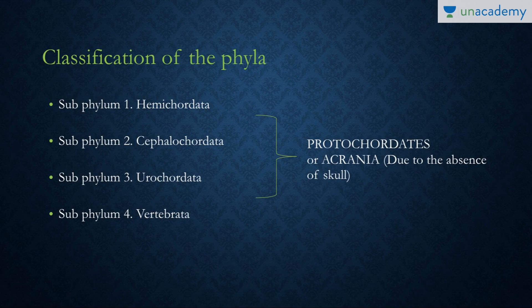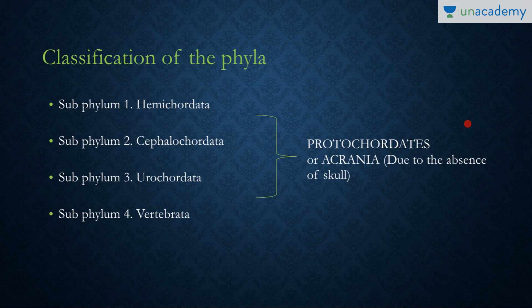In this lesson on Protochordates, I will first divide phylum Chordata into its four subphyla. Subphylum 1, Hemichordata, used to be considered a subphylum under Chordata, but presently it is a separate phylum, as it does not have any notochord. Then we have Subphylum 2: Cephalochordata, Subphylum 3: Urochordata, and Subphylum 4: Vertebrata. The first three are the Protochordates — 'proto' meaning early — also called Acraniata because they do not have a skull.